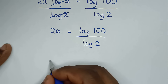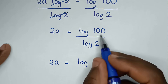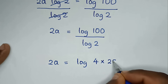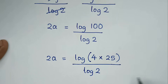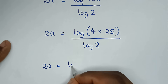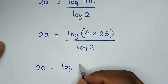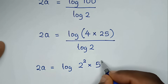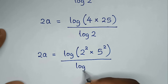Then in the next step, 2a is equal to log base 2 of 100. From here, 100 is the same as 4 times 25, so we have 2a is equal to log of (4 times 25), all over log of 2.